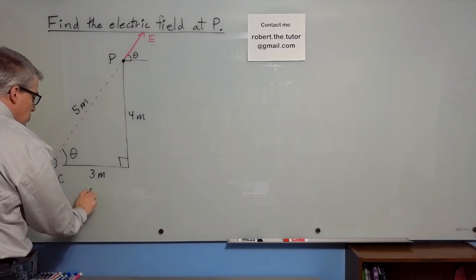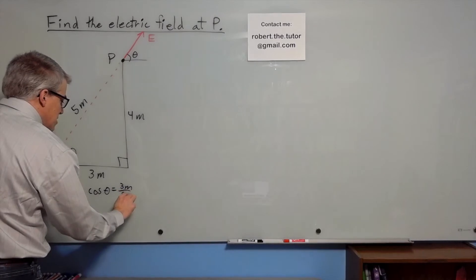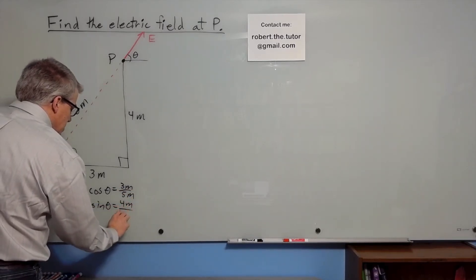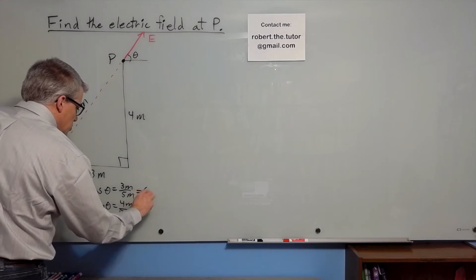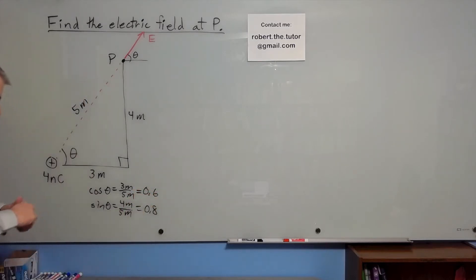We can then note that the cosine of theta is 3 meters over 5 meters. Sine of theta is 4 meters over 5 meters. So that's 0.6, that's 0.8. Set that aside for now.